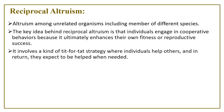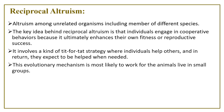Reciprocal altruism involves a kind of tit-for-tat strategy. Once you have helped someone, that someone should have the duty to help you in the future — in return, they expect to be helped when needed. This evolutionary mechanism is most likely to work for animals living in small groups. A key feature of reciprocal altruism is repeated interaction: it is most likely to evolve in situations where individuals interact repeatedly, creating opportunities for reciprocation and ensuring costs and benefits of altruistic acts are spread over multiple interactions.